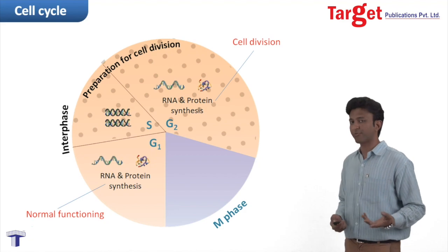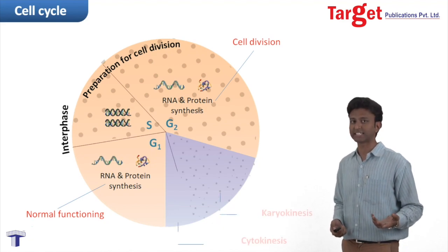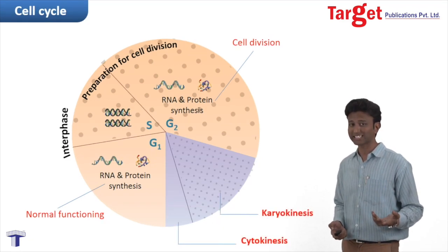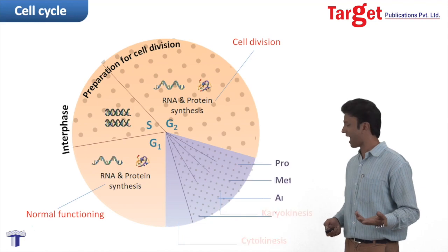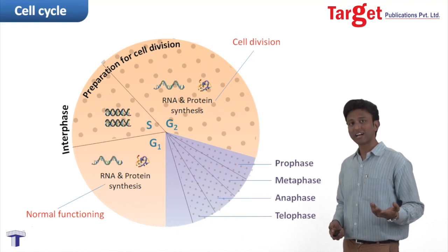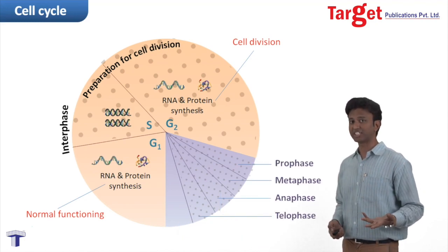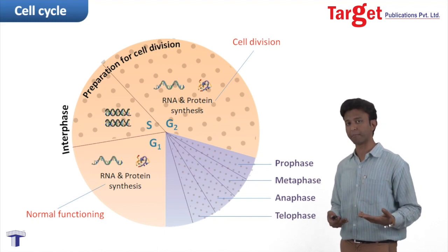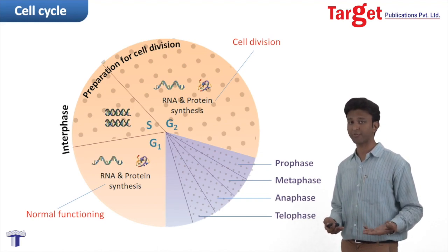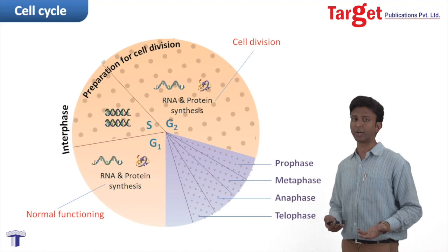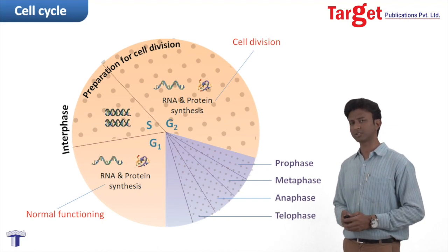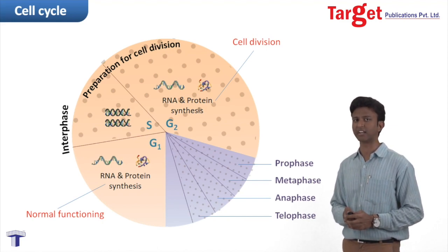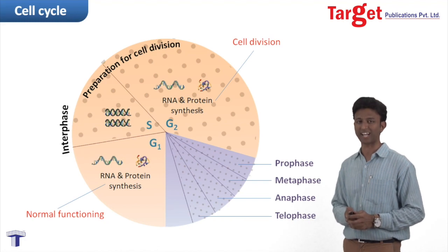The M phase can be divided into two parts: karyokinesis and cytokinesis. Karyokinesis can further be divided into four sequential parts — prophase, metaphase, anaphase, and telophase. But more about mitosis in our future videos. That's it for this cell cycle topic.